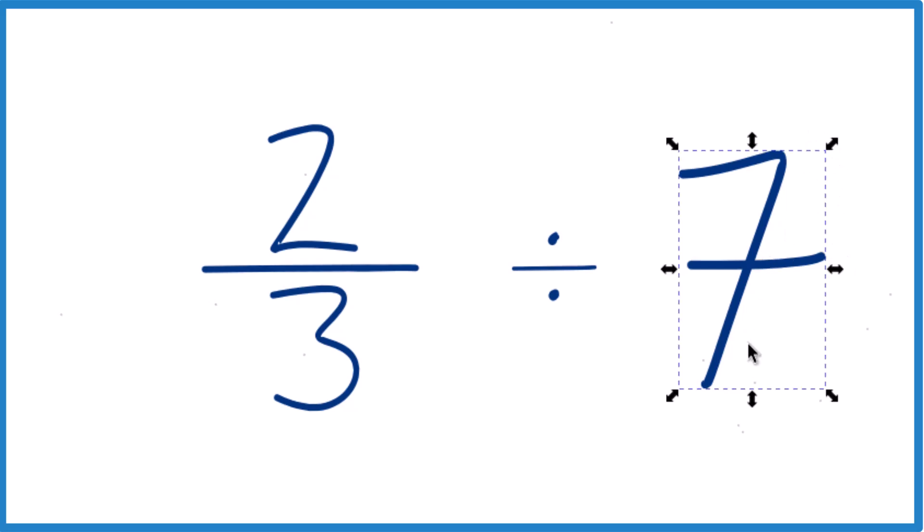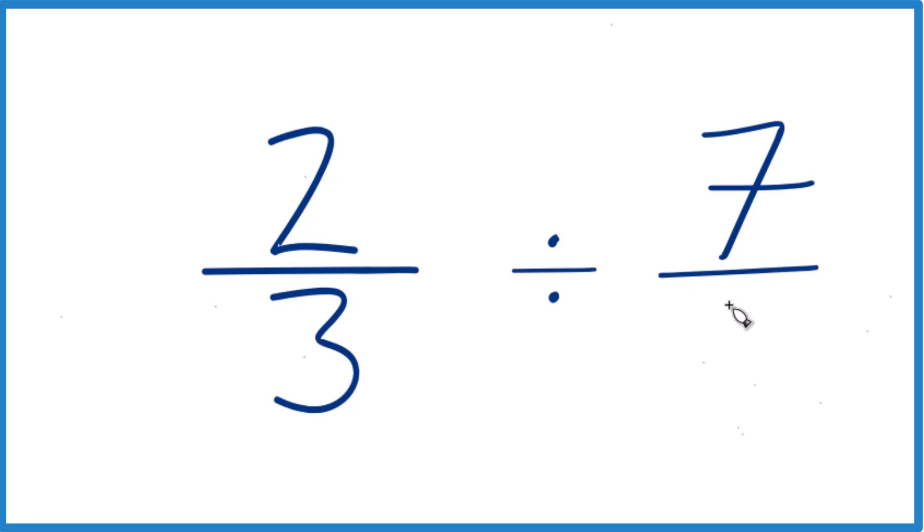We're going to take this seven, and instead of seven, we're going to put it up here, we're going to call it seven over one. Seven divided by one, it's still seven.